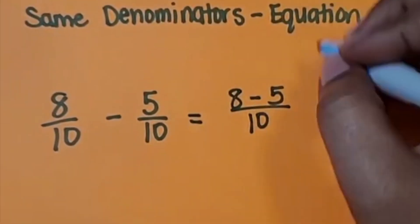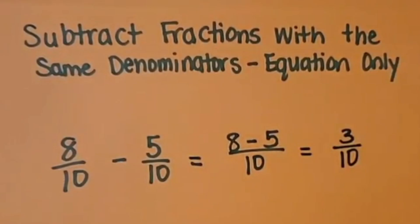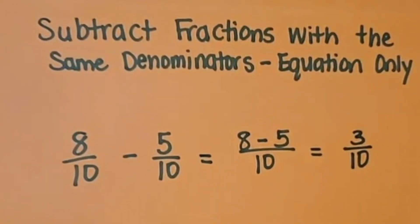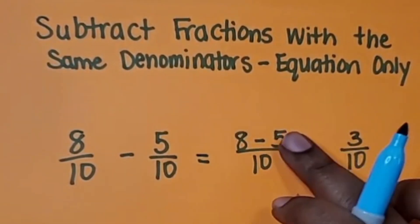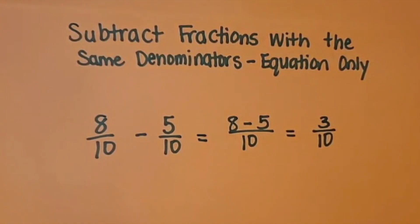8 tenths minus 5 tenths, we're left with 3 tenths. Again, the denominator does not change because it tells us the type or size of the pieces that we have. So we have 8 tenths-sized pieces and 5 tenths-sized pieces. 8 of those tenths-sized pieces minus 5 of those tenths-sized pieces gives us 3 tenths-sized pieces.